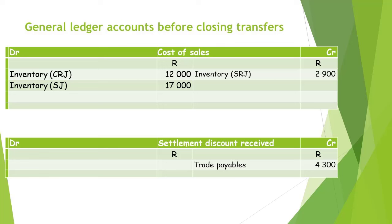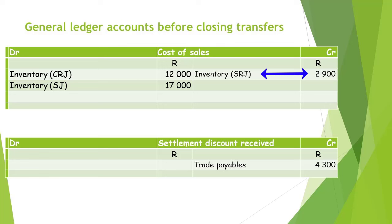In order to do the closing transfers for cost of sales when using the perpetual inventory system, we need to start with the settlement discount received account in the general ledger. If we look at the cost of sales account, we can see entries posted from the cash receipts journal and the sales journal on the debit side, and an entry from the sales returns journal on the credit side. The first entry on the debit side relates to the cost of sales of inventory that was sold for cash, totaling 12,000 rand, and the second entry relates to the cost of sales of inventory that was sold on credit, totaling 17,000 rand. The entry on the credit side relates to the cost of goods previously sold on credit that was returned by customers.